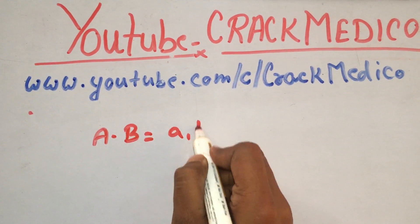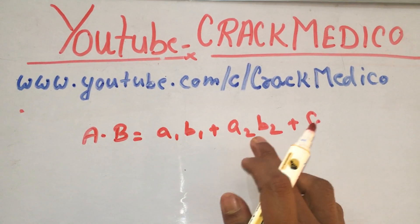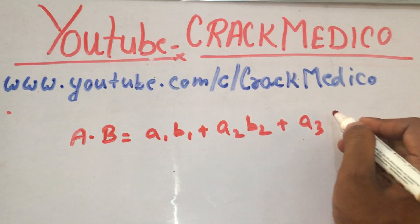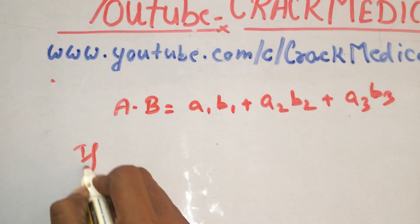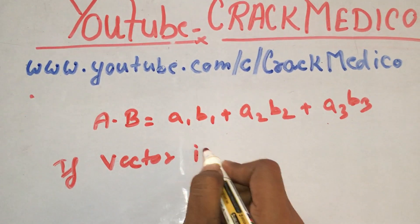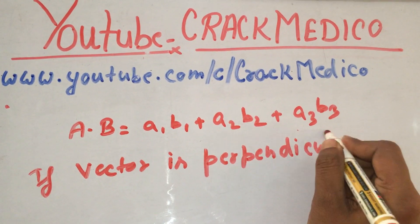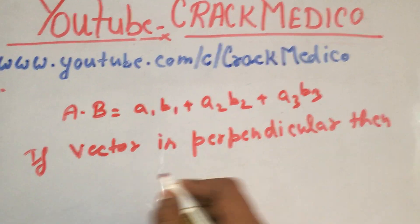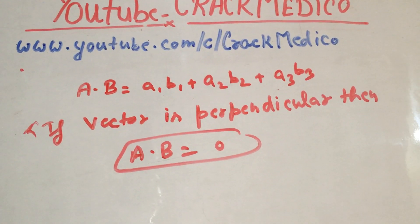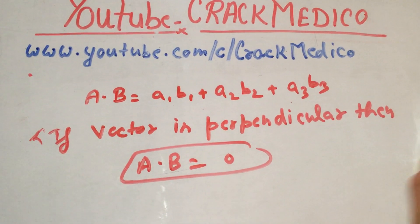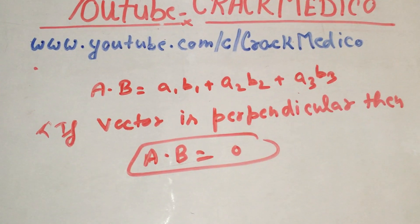So A·B is equal to a1·b1 plus a2·b2 plus a3·b3. That is the dot product formula. An important concept: if the vectors are perpendicular to each other, then the dot product of both vectors will be zero. If vector A and vector B are perpendicular, then A·B equals zero.